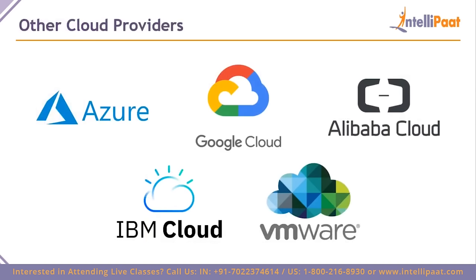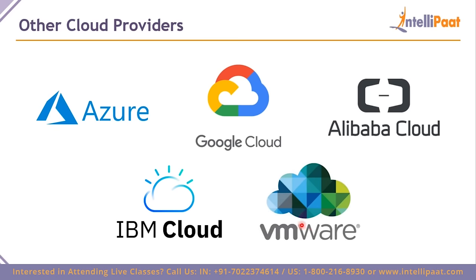Other cloud providers include Azure, Google Cloud, Alibaba Cloud, IBM Cloud, and VMware. Azure is second after AWS; Google is third. Azure is Microsoft's cloud service, Google Cloud is Google's, and Alibaba Cloud is Alibaba's. VMware provides virtualized environments similar to Azure and AWS but is less popular. AWS remains number one in the cloud industry.